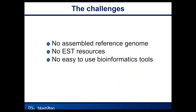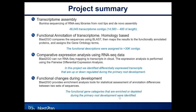The challenges we faced: there is no assembled reference genome. There is one very fragmented assembly now in GenBank, but it's not much use for functional research. There are also no EST resources for this species. So we decided to create our own transcriptome assembly and use it for comparative expression analysis and for identification of functional changes in root development. We started from transcriptome assembly using Illumina sequencing, created RNA-seq libraries, and after de novo assembly, we obtained over 49,000 transcriptome contigs with the longest contig over 14 kilobases.